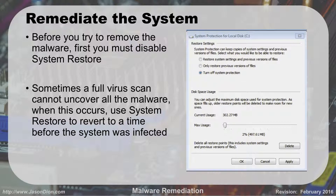When remediating the system, before you remove the malware, you first have to disable system restore. Go into your system protection settings, turn off system protection as shown in the upper right corner, then hit apply in the bottom right corner. Once you've done that, you can run a full virus scan and start cleaning up the virus. Sometimes a full virus scan can't uncover all the malware, and if that occurs, you'll need to restore from a backup from before you had the virus.